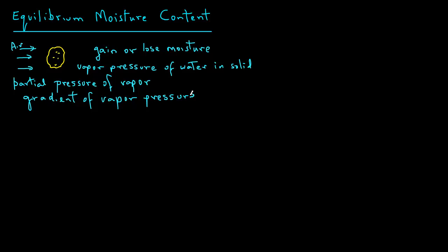We assume that the partial pressure of vapor in the air remains constant during this period. If we leave this moist sample in the air stream for a sufficiently long time, we reach equilibrium conditions. Under those equilibrium conditions, the moisture content of the sample is called the equilibrium moisture content, or EMC.